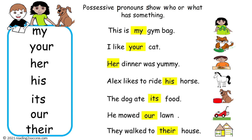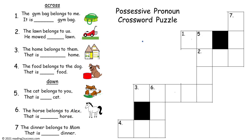Read the sentences for each: This is my gym bag. I like your cat. Her dinner was yummy. Alex likes his horse. The dog ate its food. He mowed our lawn. Our first activity with possessive pronouns is a crossword puzzle — kids will work on pronouns that go across and then pronouns that go down.